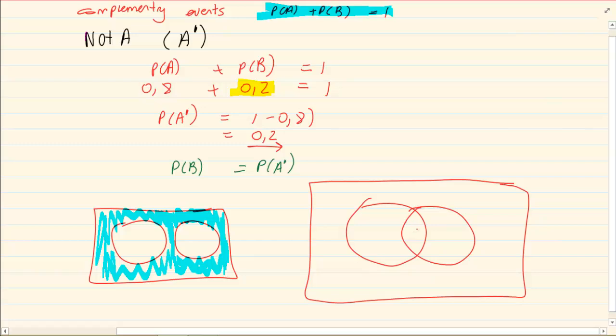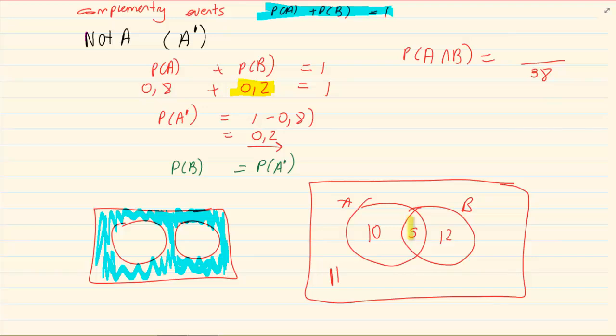So let's say I had an A and a B and then I had 5 and here I had 10, 12 and here I had 11. Now if I wanted the P of A and B, you would tell me the total is 10, 15, 27, 28, 38. The total is 38. The P of A and B would be 5 over 38.